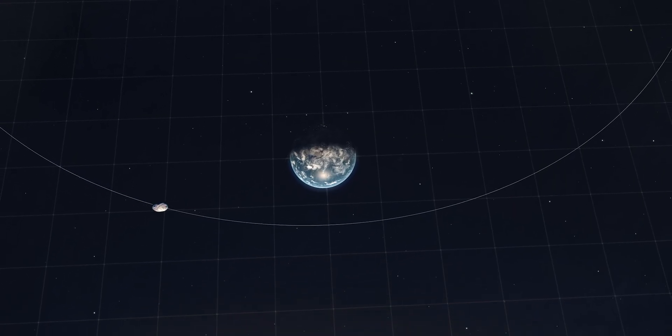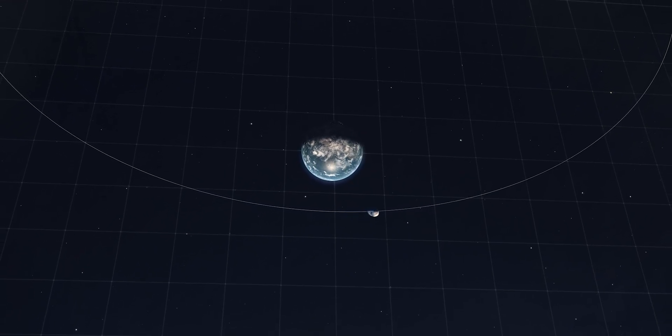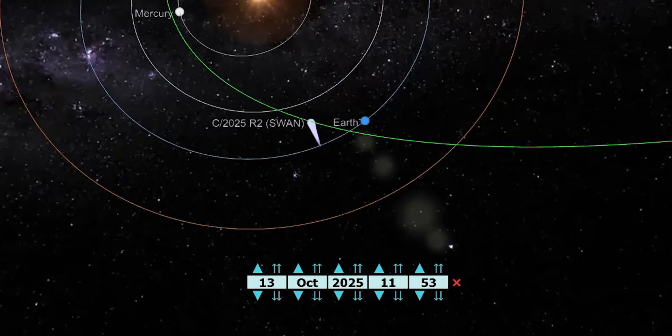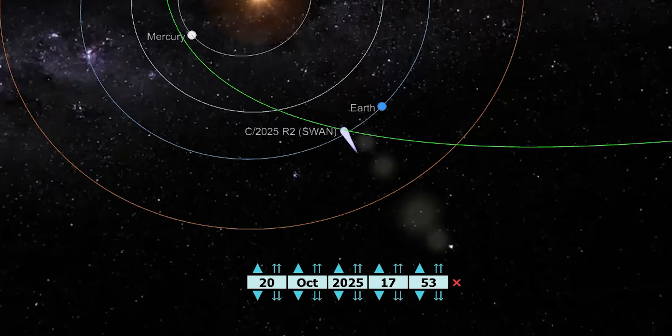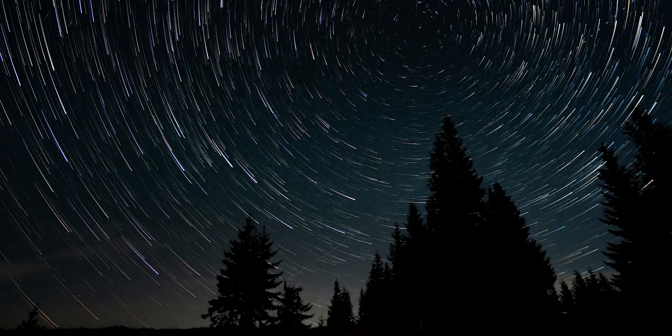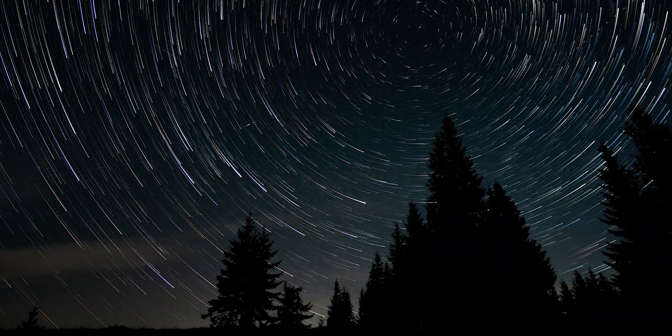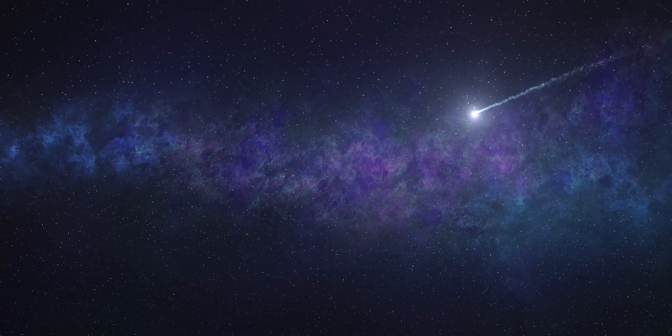On October 20th, 2025, C2025 R2 SWAN made its closest pass to Earth. 39 million kilometers away. Silent, untouchable, and already moving back toward the dark. For most people, it was another forgotten headline. A week crowded by meteor showers. A bright sky show. A passing curiosity. But for astronomers and space agencies, SWAN left behind something deeper than spectacle. It exposed how fragile our cosmic awareness still is.